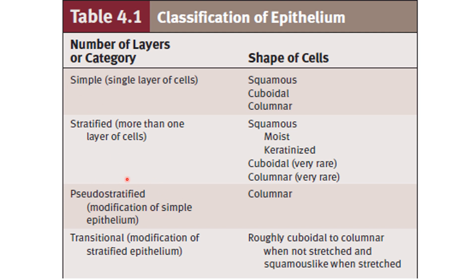Pseudo-stratified epithelium is a modification of simple epithelium. It is a single layer of columnar cells with different heights, and the different positioning of nuclei in each cell makes them appear stratified. They are therefore called pseudo-stratified.